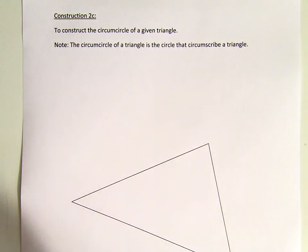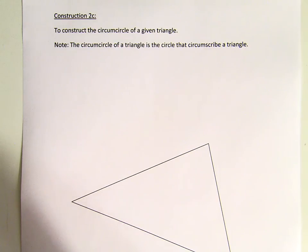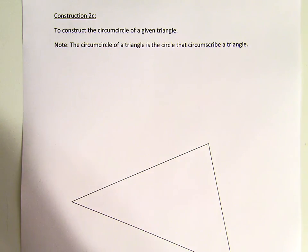The following is a construction which is not in the book, but somewhere in the middle chapter of the book, we will see something called circumcircle. This construction — I call it construction 2C because it is based on construction 2B — is to construct the circumcircle of a given triangle.